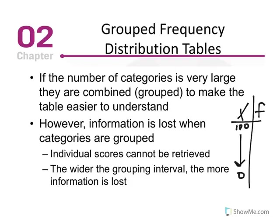If the number of categories is very large, they are combined or grouped to make the table easier to read or understand. However, information is lost when categories are grouped. There is a disadvantage when we construct a group frequency distribution — the exact value represented as the x value is lost in terms of the frequency denoted. Let me show you what I mean by that.